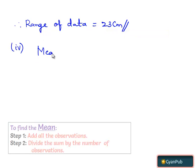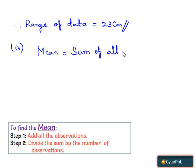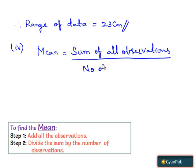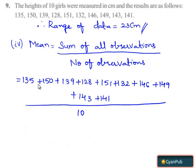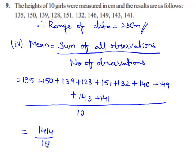We can obtain the mean by dividing the sum of all the observations by the number of observations. Here, the number of observations is 10. Therefore, when we solve this, we get 1414 divided by 10, which is equal to 141.4 cm.